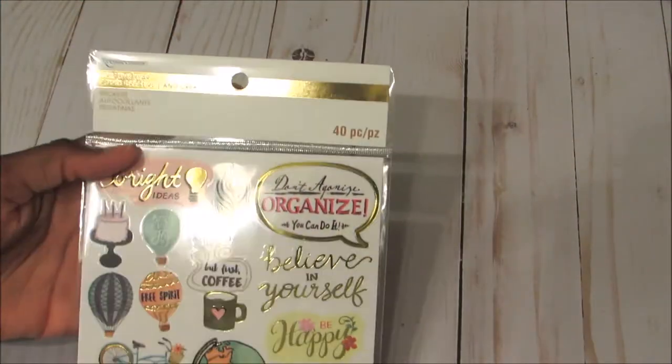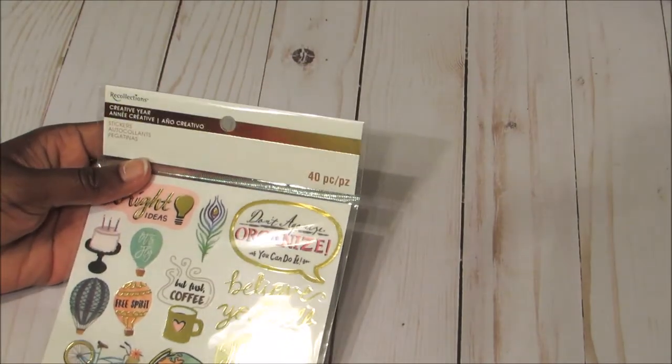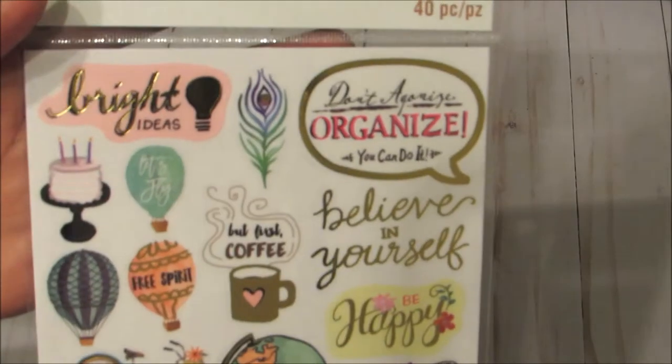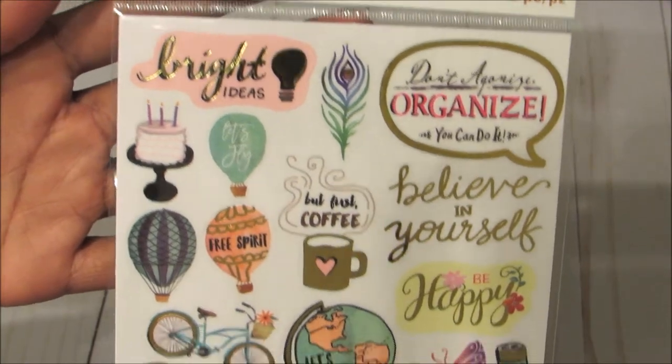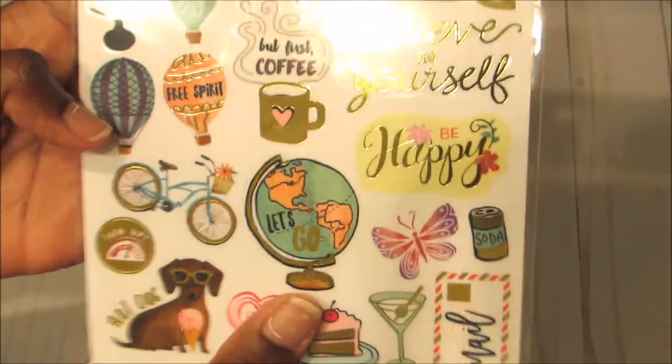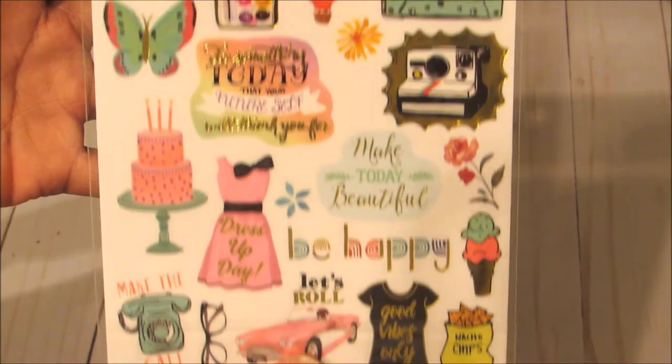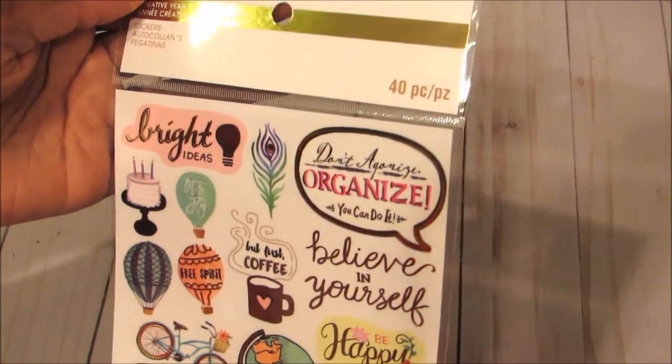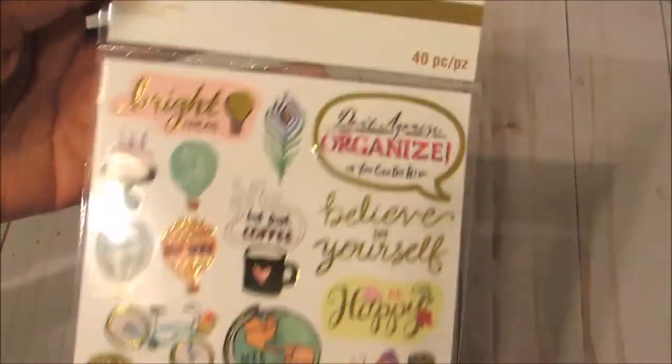My second trip, I went and got this set. This is the Recollections Creative Year stickers. And you've probably seen these a lot on the two. But this is what this looks like. And it was $3.99. But with the 60% off, it was $1.59. So I just grabbed that. And it's 40 pieces. You just get these two sheets. You get this sheet and that sheet. So that was good.